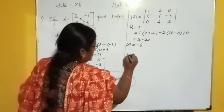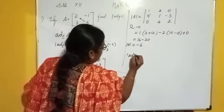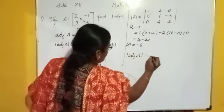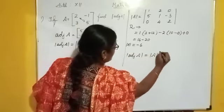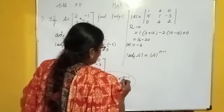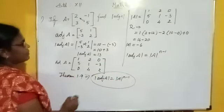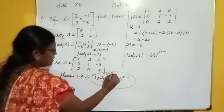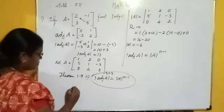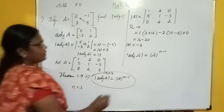Now use this statement: determinant of adjoint of A is equal to determinant of A to the power n minus 1. Here, n means the order of the given matrix. This order is 3 by 3, so n equals 3.